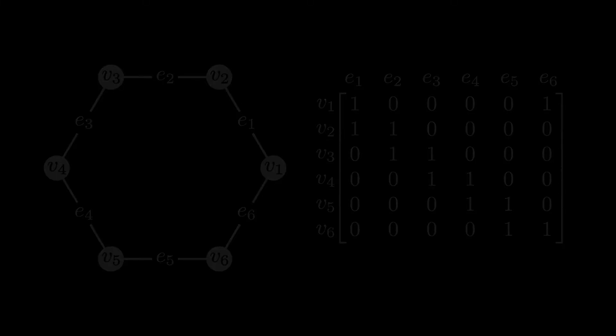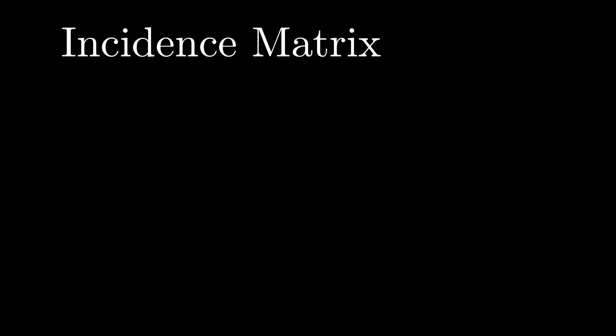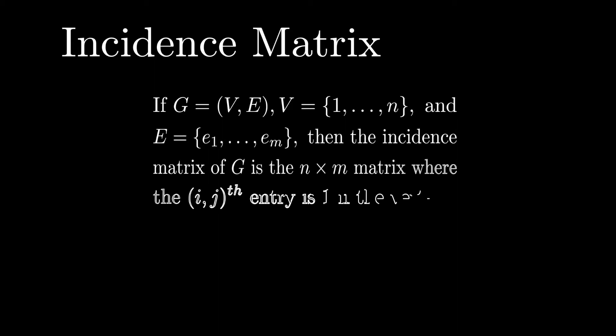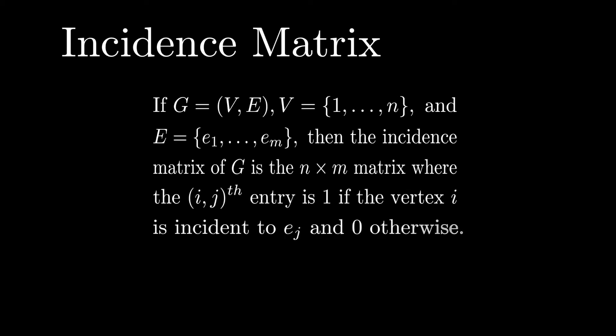Now, more precisely, we say that if g is a graph, and the vertex set is just the numbers 1 through n, and the edge set is e1 through em, then the incidence matrix of g is the n by m matrix, where the ijth entry is 1 if vertex i is incident to the edge ej, and 0 otherwise.